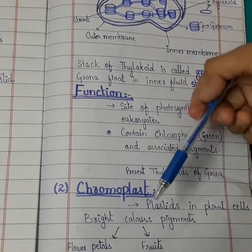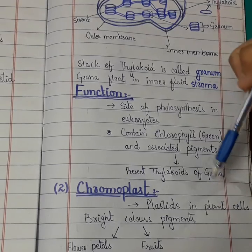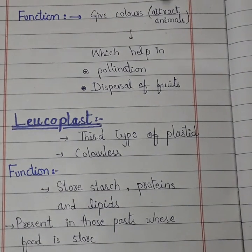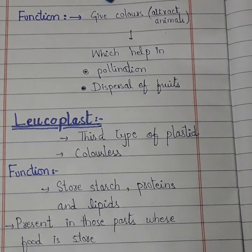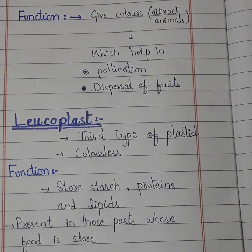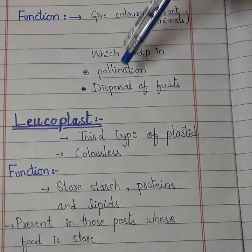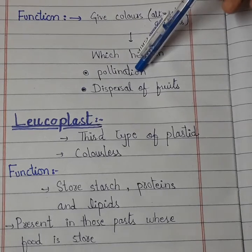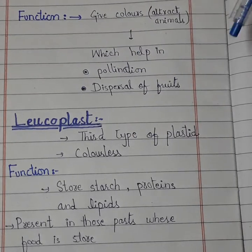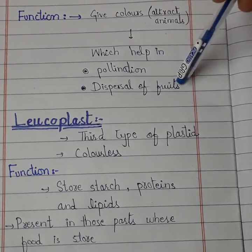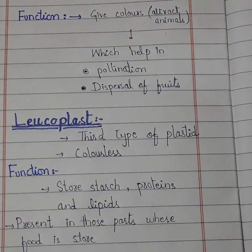The bright colors of chromoplasts serve to attract animals to the plants. These animals help in pollination — the transfer of pollen between male and female parts of the plant. They also help in the dispersal of fruits and seeds, allowing new plants to grow.